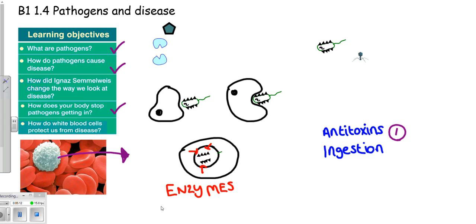Eventually, only the building blocks of the pathogen are left, and these can be safely released back into the human body when they're not going to cause any harm. So the second way our body is protected from pathogens by white blood cells is ingestion.